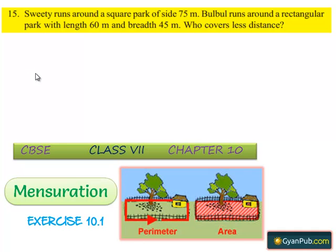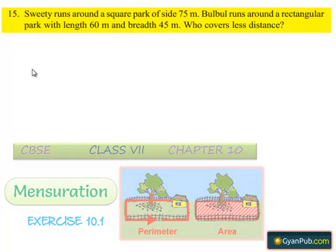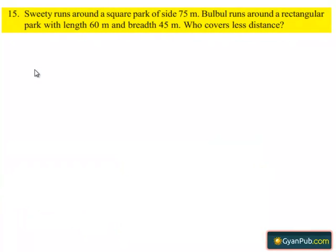Moving on to the 15th question. Given: Sweetie runs around a square park of side 75 meters and Bulbul runs around a rectangular park with length 60 meters and breadth 45 meters. Who covers less distance?